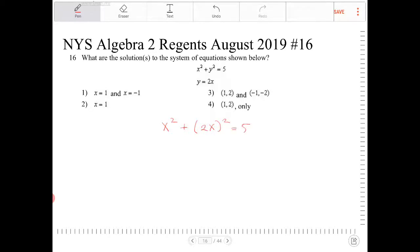So the first equation is now an equation with only one variable. I have now x squared plus 4x squared is equal to 5. Combining like terms, I get 5x squared is equal to 5. Divide both sides by 5, I get x squared is equal to 1. Take the square root of both sides, I end up with x is equal to plus or minus 1.